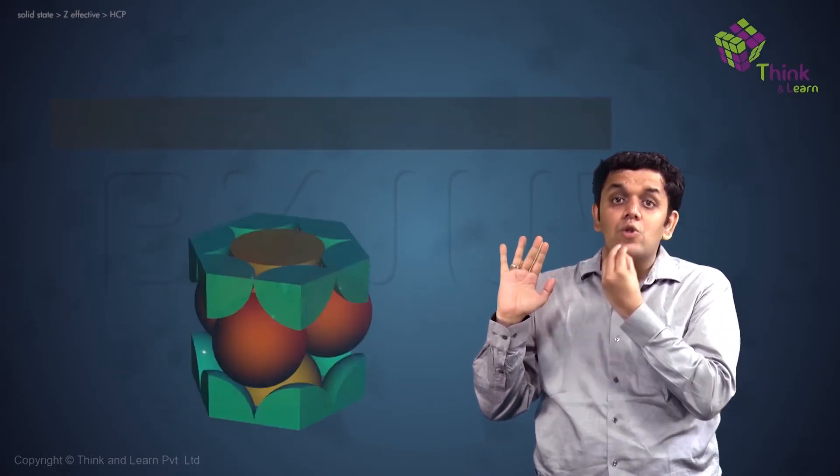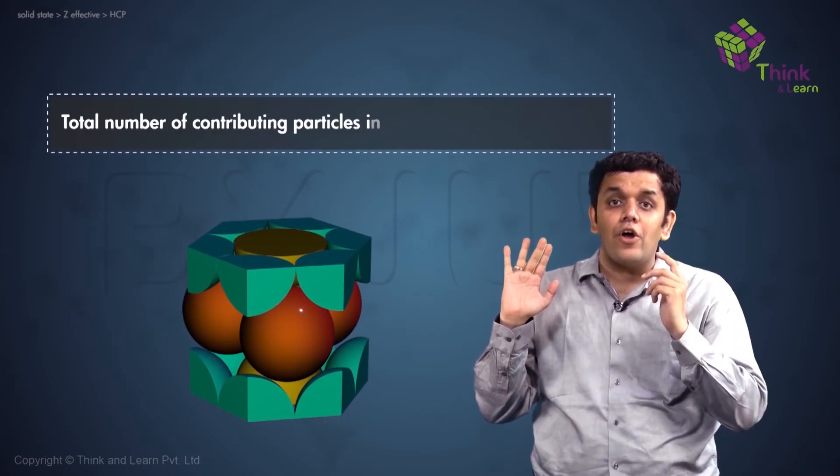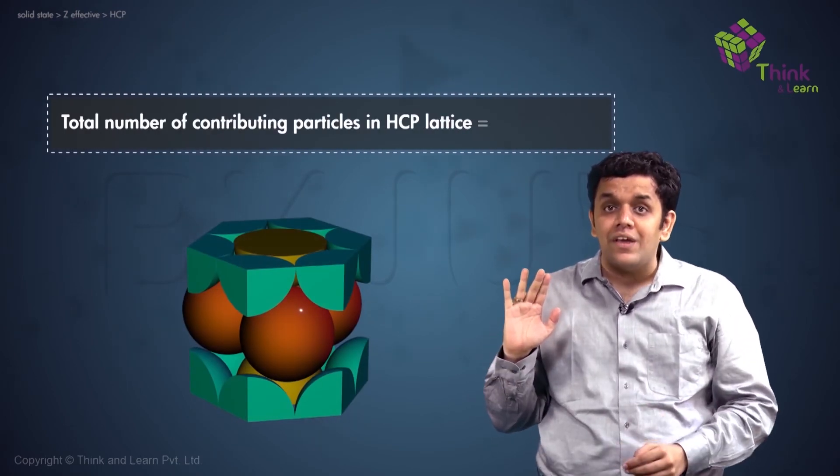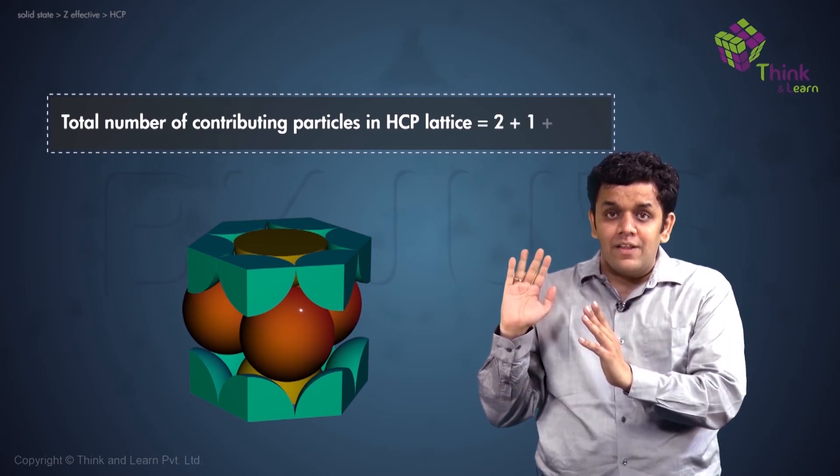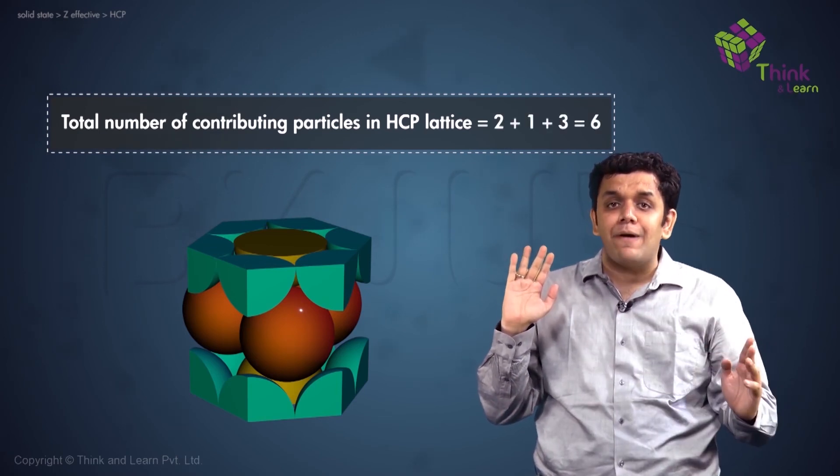So therefore, the total number of particles Z effective for HCP lattice is going to be two plus one plus three, which comes to six particles per unit cell.